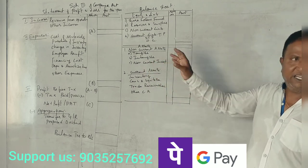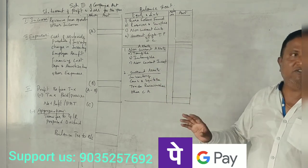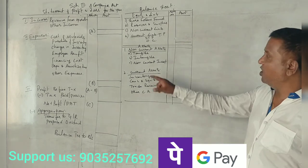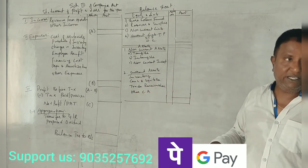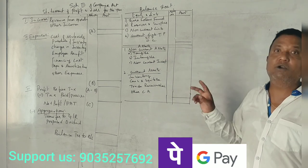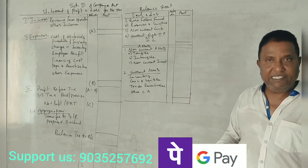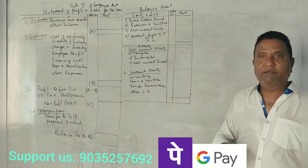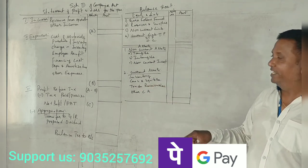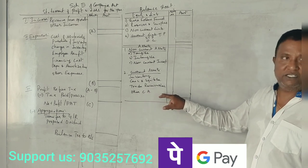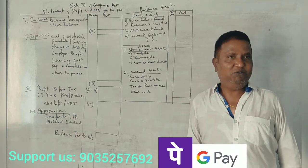Under assets: non-current assets include fixed assets — tangible and intangible — and non-current investments (long-term investments). Current assets include inventory (closing stock), trade receivables, cash and cash equivalents, short-term investments, and other current assets. At the end the Balance Sheet should tally.